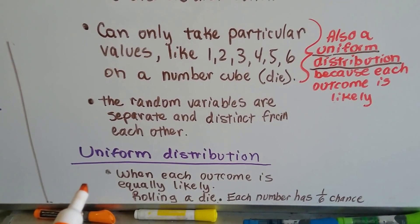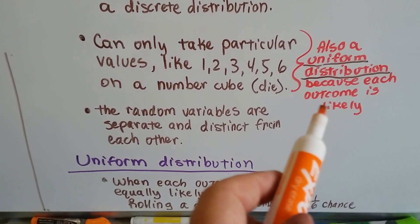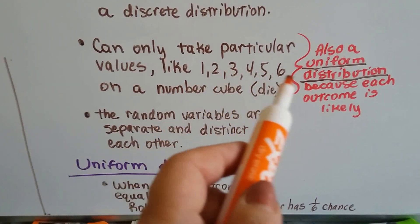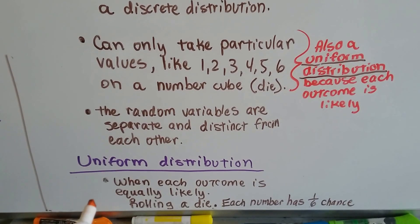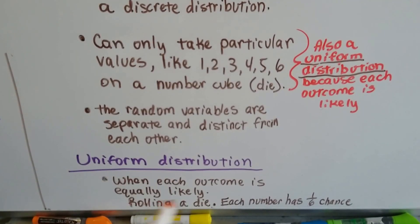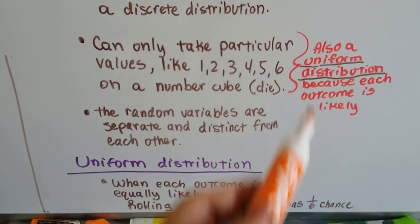Uniform distribution is when each outcome is equally likely, like when we roll that die—each one of these numbers has a 1 out of 6 chance of coming up on the die. So that's uniform; they all have the same probability.